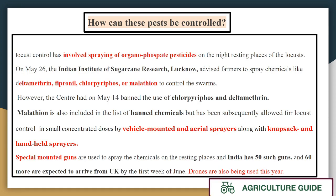For locust control, spray of organophosphates is recommended. IISR Lucknow has advised farmers to use deltamethrin, fipronil, chlorpyrifos, and malathion for control of swarms. However, the central government had banned chlorpyrifos and deltamethrin on May 14th. Malathion was also on that list, but the government has allowed the use of malathion specifically for locust control.